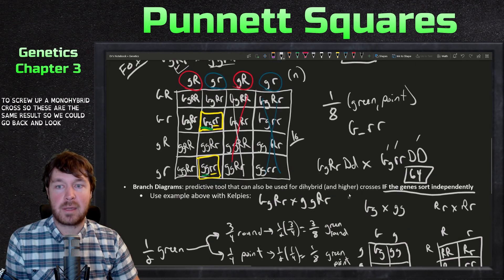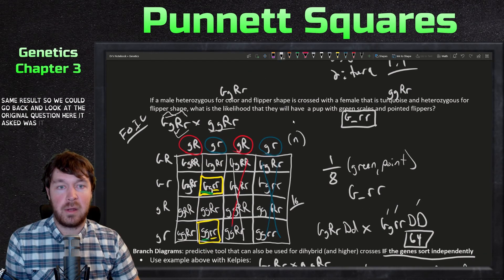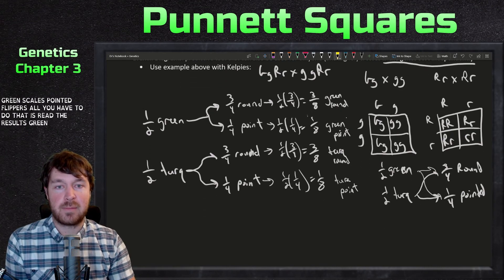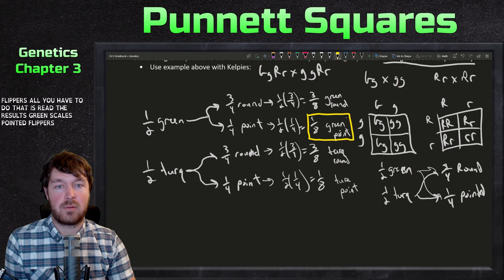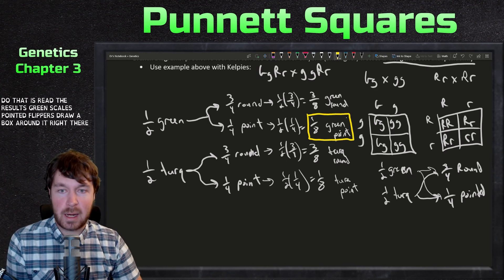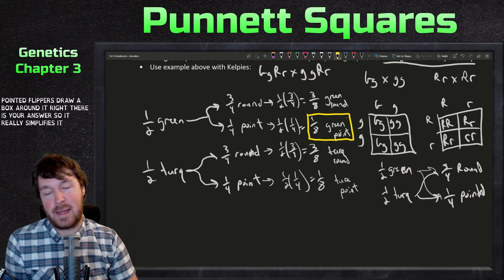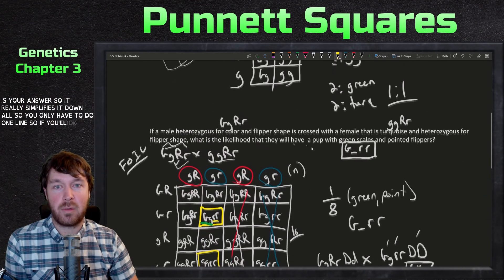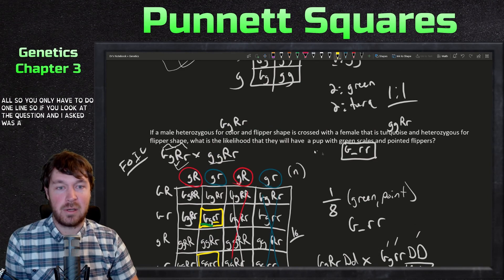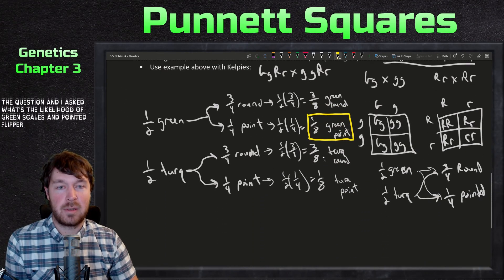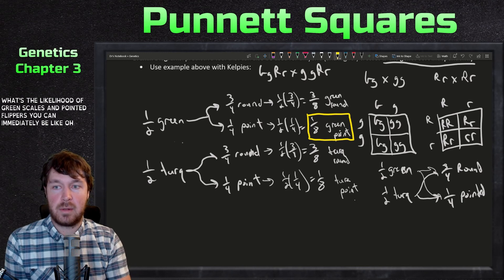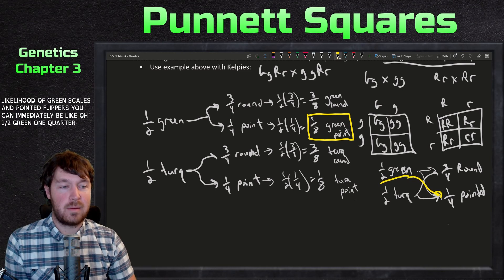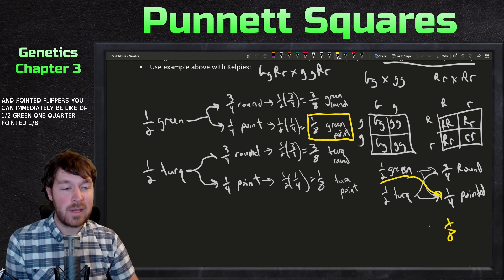Going back to the original question — what's the likelihood of green scales and pointed flippers — you can just read it off the branch diagram: green pointed is 1/8. Even better, if the question only asks for one specific combination, you can calculate just that one line: one-half green times one-quarter pointed equals one-eighth, without doing all the other branches.